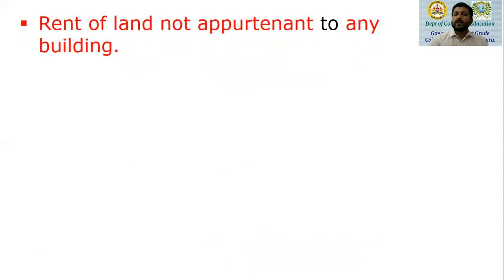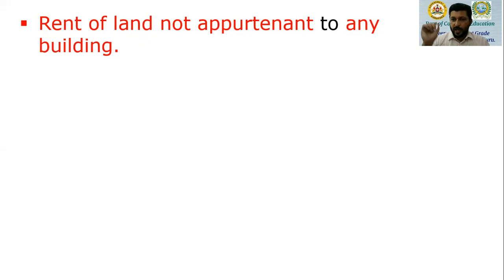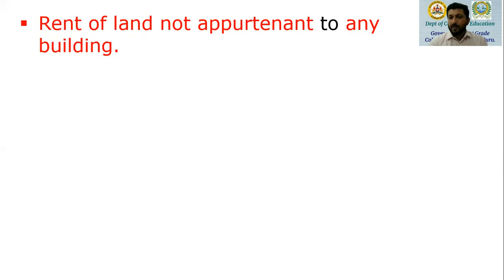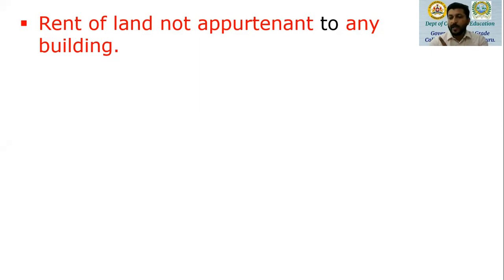Then, rent of land not appurtenant to any building. For example, if I own an exclusive piece of land with no structure, very close to a temple, and during a temple fair — a temple Jatra — the temple takes our land on rent, and then allocates it to small business traders exhibiting and selling their products for 10 to 12 days of the festival. The rental income derived from that land exclusively is taxable under other sources, because it is rent of land not connected to or appurtenant to any building.